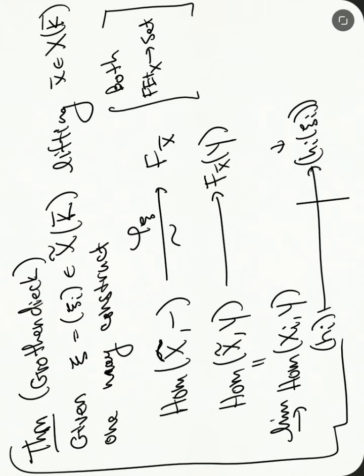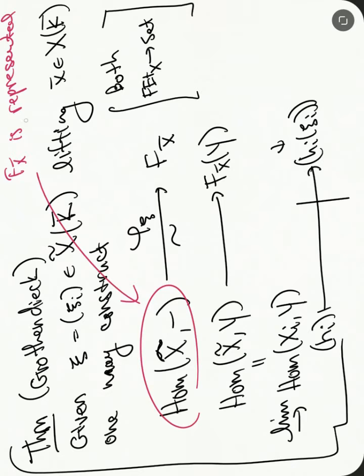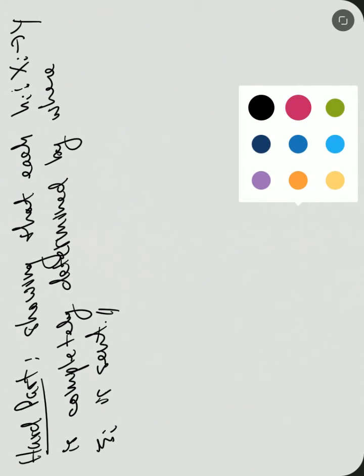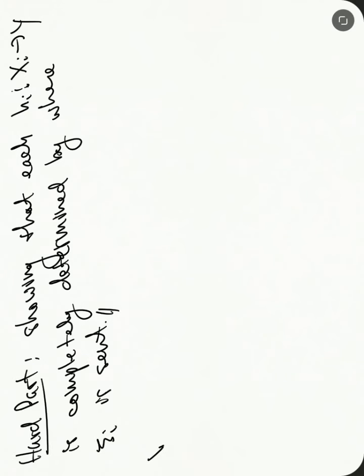But given this, right, this statement here is really saying that this functor is representable. So this says that F(x) is represented by this x̃, by this universal cover, or by the pro-universal cover. So that's the point. So now that we have that it's pro-representable, now we can conclude. So we conclude.